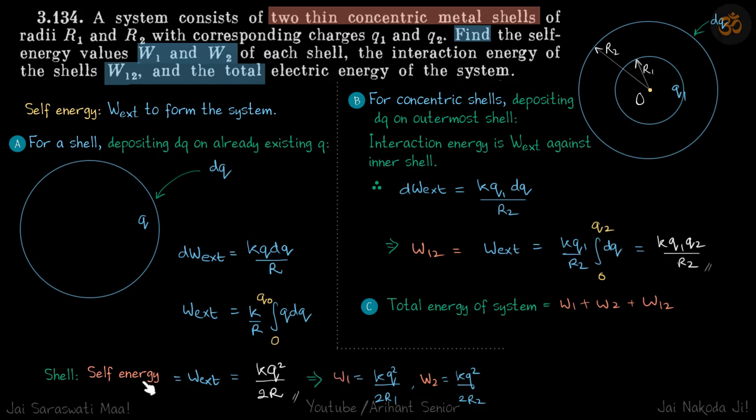So this is the self-energy of a shell. So this implies that W1 and W2 for each shell will be kQ² by 2R1 and kQ² by 2R2. So this should be kQ1² by 2R1 and kQ2² by 2R2.